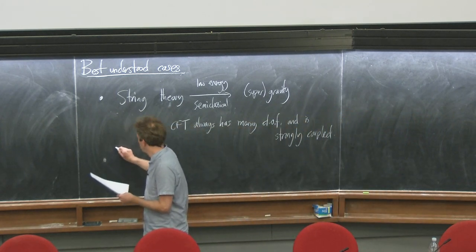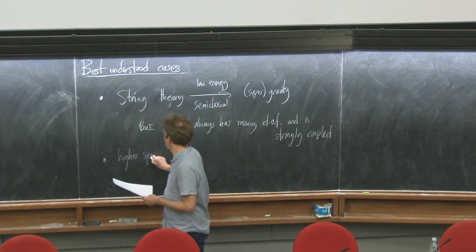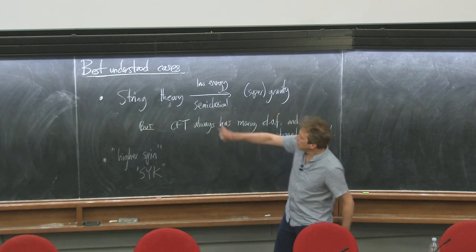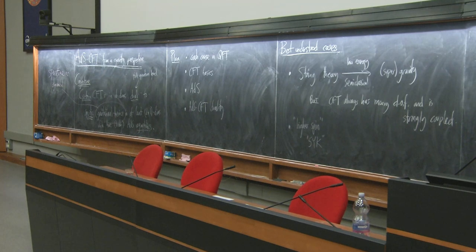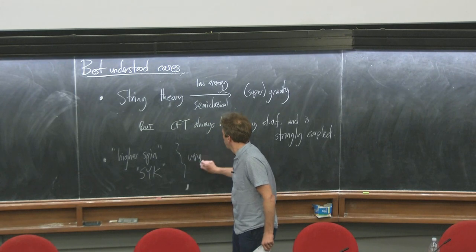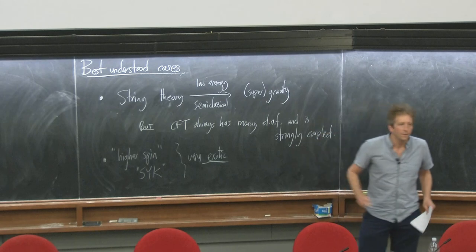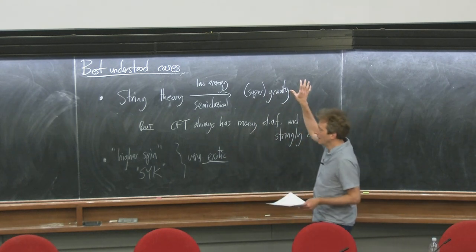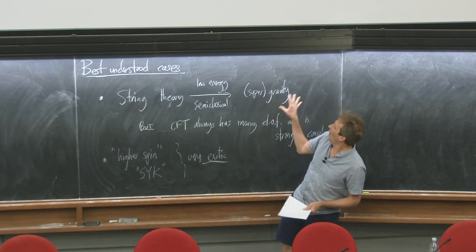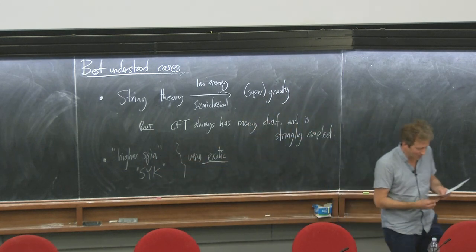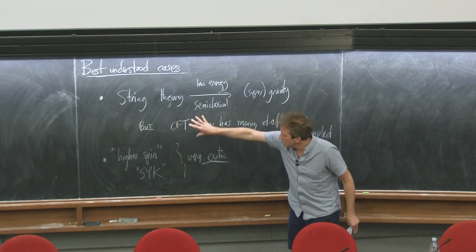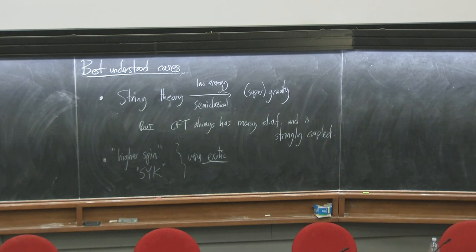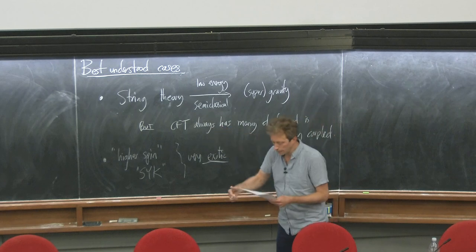There are also more exotic cases which I'm not going to talk about - higher spin theories and very recently the SYK models. These also seem to have gravity duals, but they're very exotic theories that don't look like Einstein gravity. In these cases you can say more about the CFT because it's not necessarily strongly coupled, but the gravitational theory is very exotic - so exotic it may not be useful if we really want to understand the gravities we're interested in.